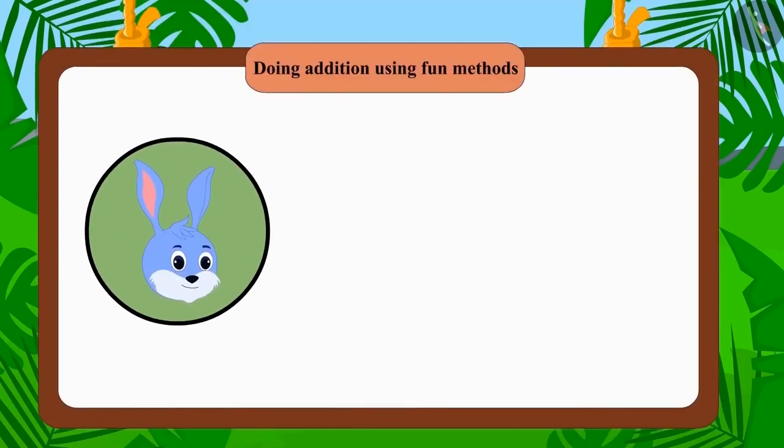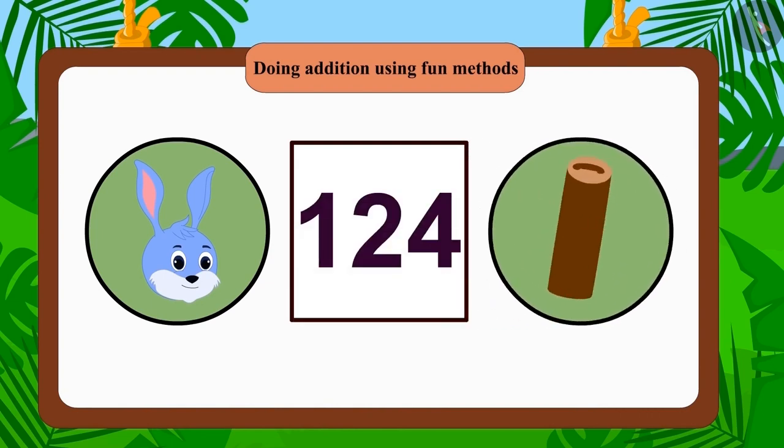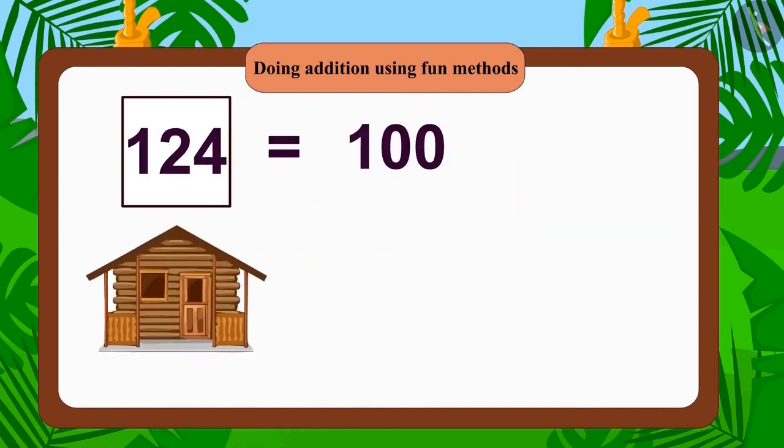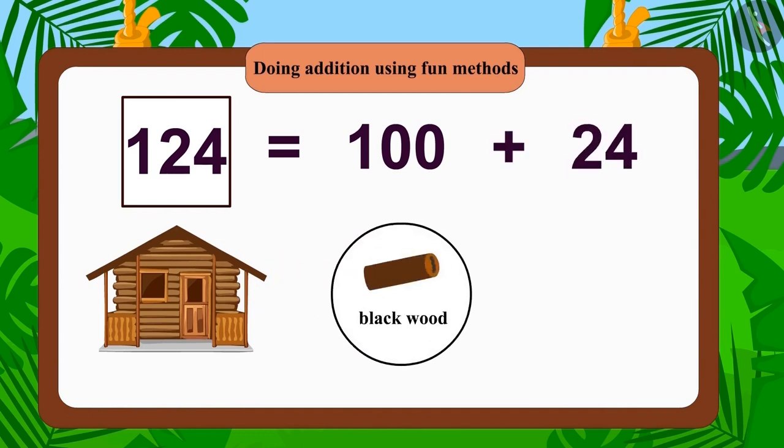Bunny built his house with 124 pieces of wood. He built his house using 100 pieces of black wood and 24 pieces of yellow wood.